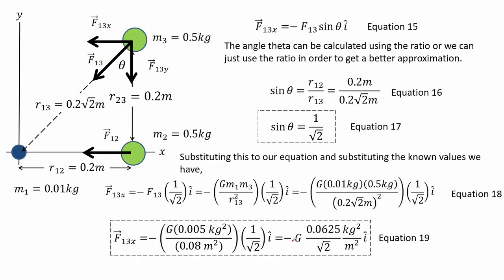The angle theta can be calculated using the ratio to get a better approximation. We see that the sine function is the ratio of the length r1-to-2 over r1-to-3, as shown in equation 16.